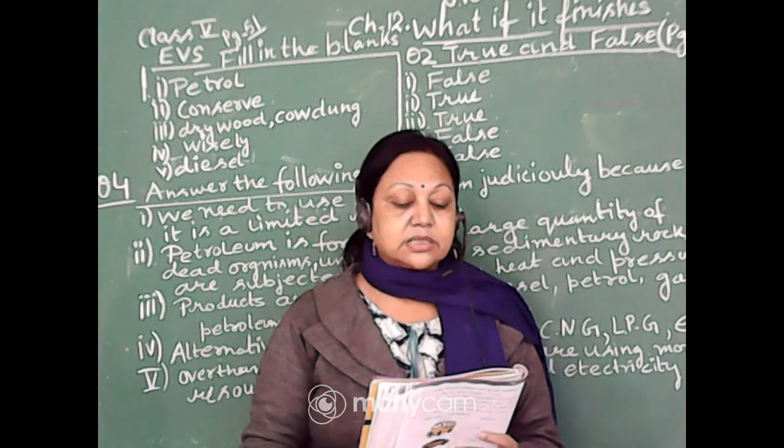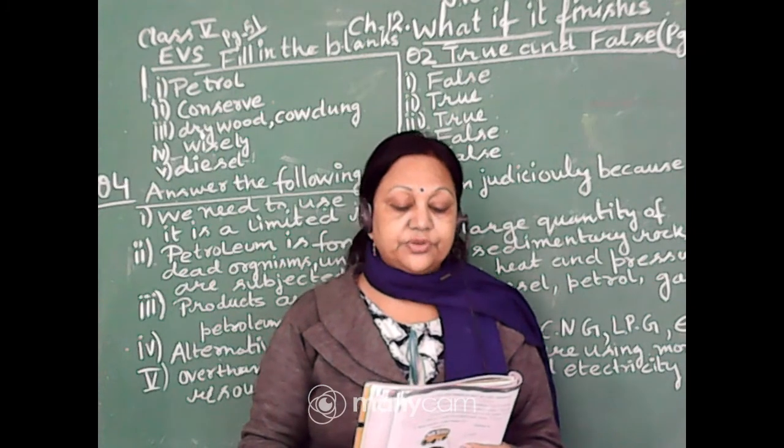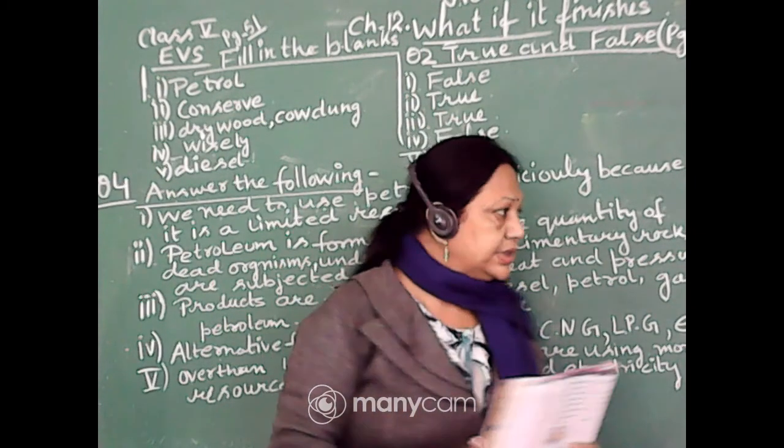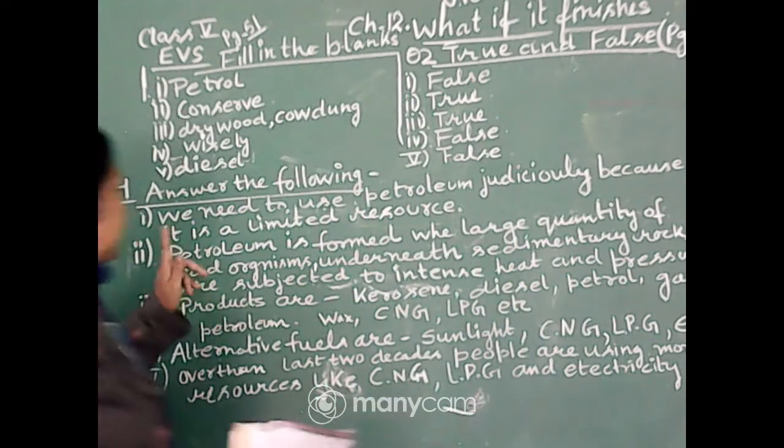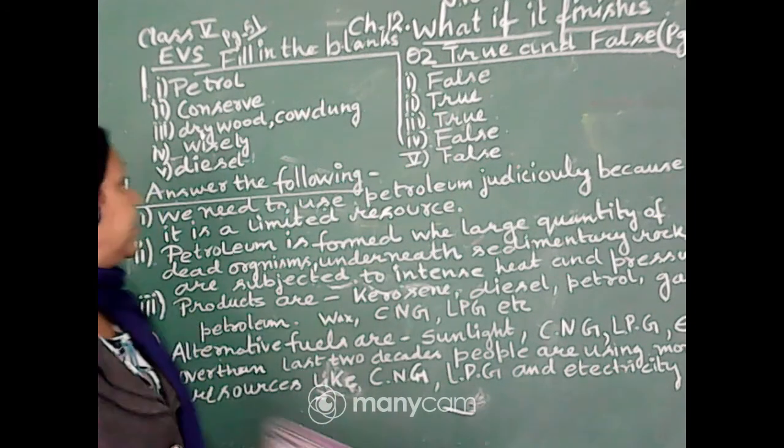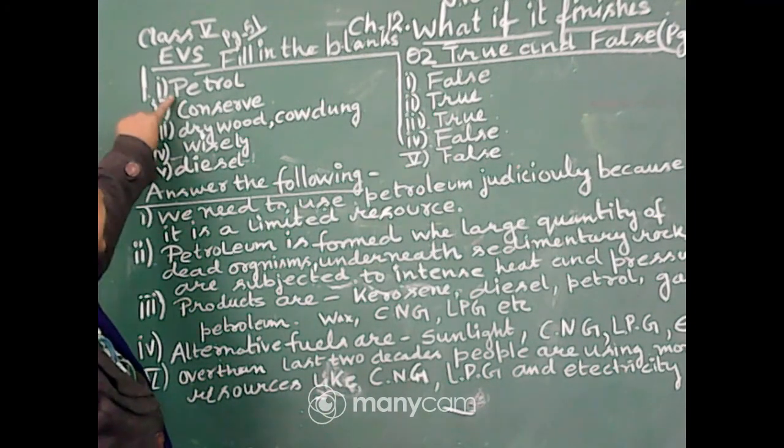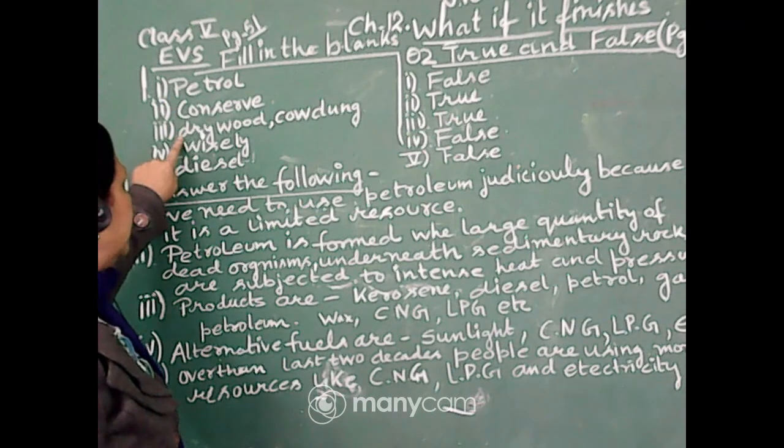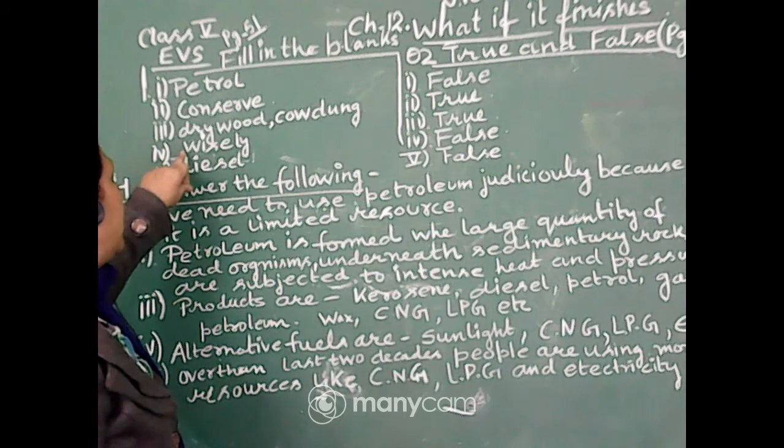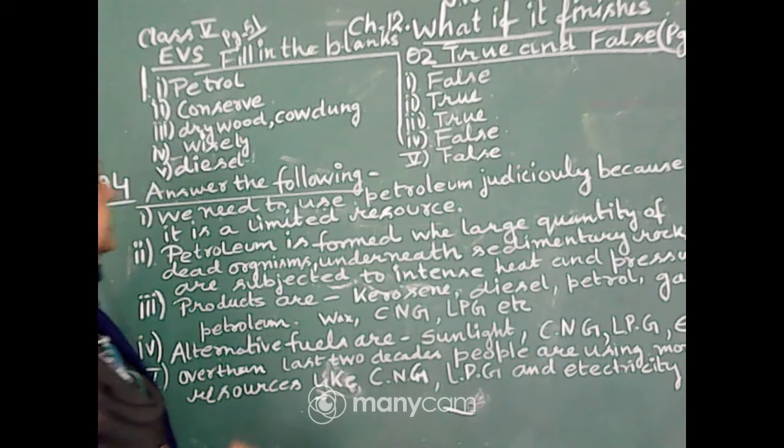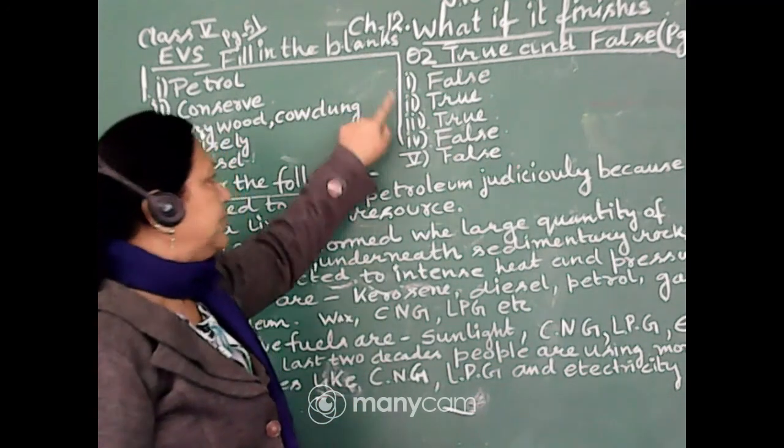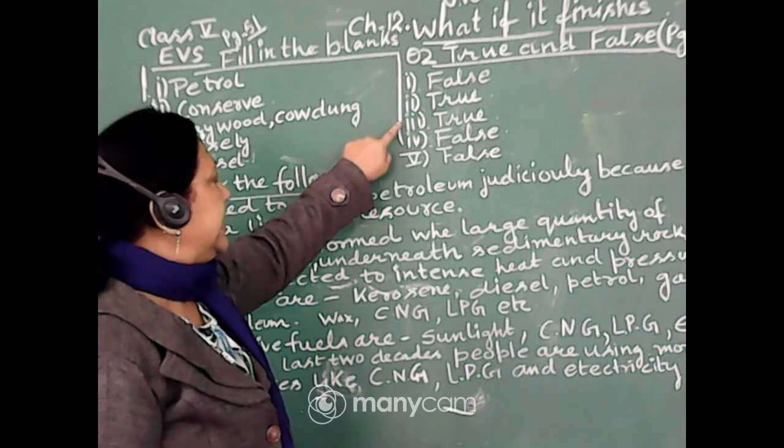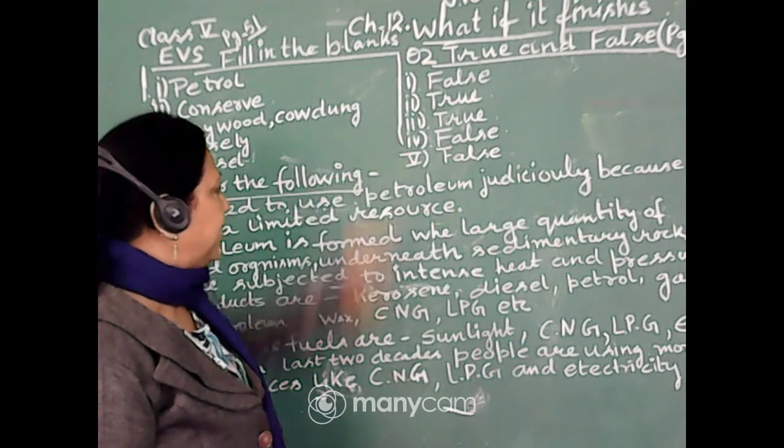Okay. Now, next answer four, question four. Answer the following question. So, this is the answer to the following question. One by one, at first see fill in the blanks. First one is petrol, second one is conserve, third one is dry wood cow dung, and fourth is wisely, fifth is diesel. And true and false: number one false, number two true, number three true, number four false, number five false.